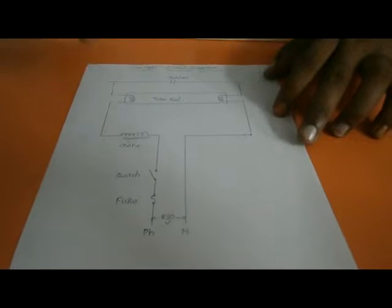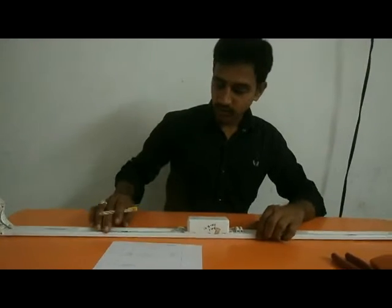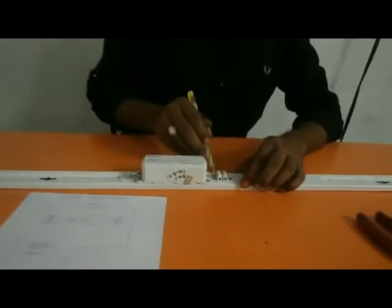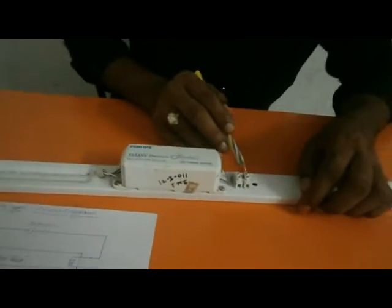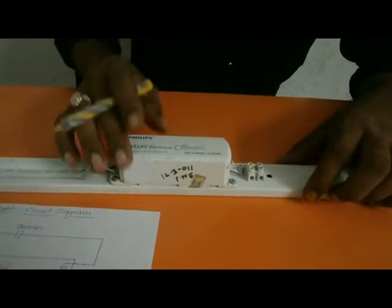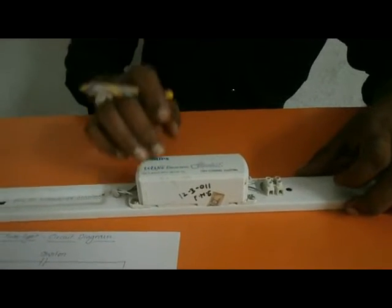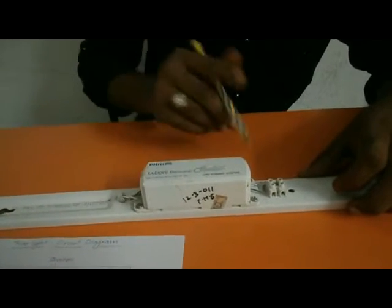So all the components in the tube light are connected in series with each other. At this terminal bridge, we are going to connect the phase and neutral coming from the supply. Let us see how the connections are given.